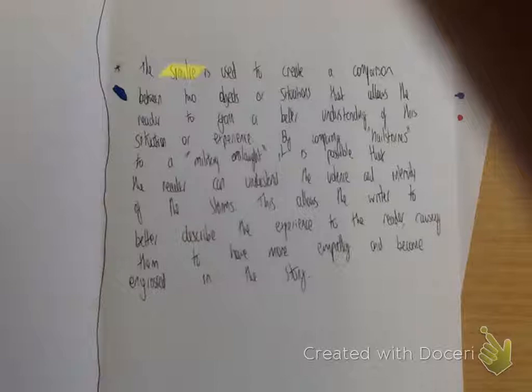By comparing hailstorms to a military onslaught, it is possible that the reader can understand the violence and intensity of the storm. This allows the writer to better describe the experience to the reader, causing them to have more empathy and become engrossed in the story.